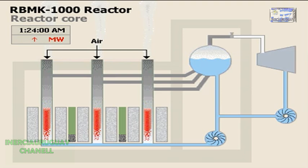Air entering the reactor mixed with hydrogen from the superheated steam and vapor from the overheated graphite blocks to create a second bigger explosion.